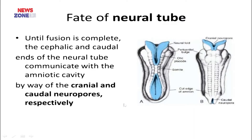The fate of the neural tube: until fusion is complete, the neural tube has two pores — the cephalic and caudal pores. Through these pores, it communicates with the amniotic cavity. At different times, both pores fuse and ultimately form a closed neural tube.